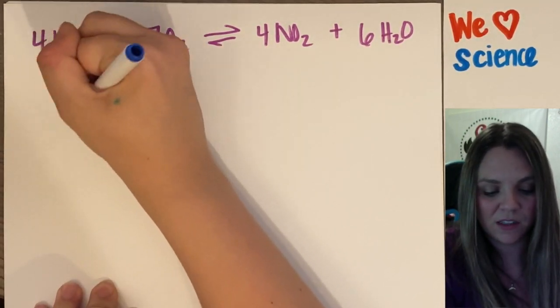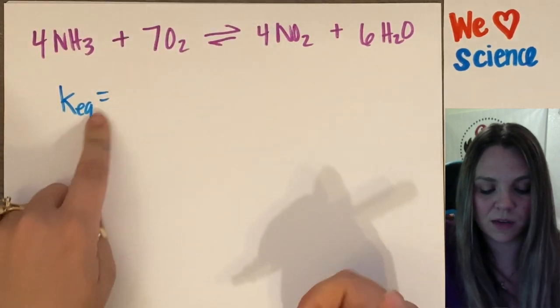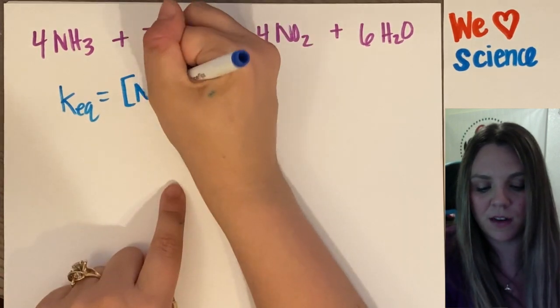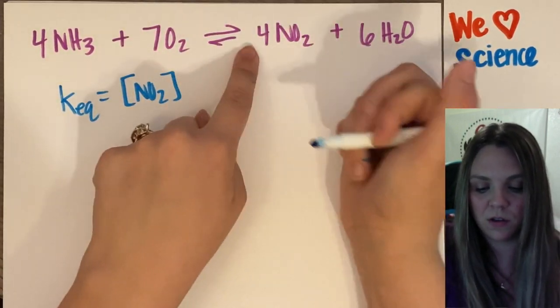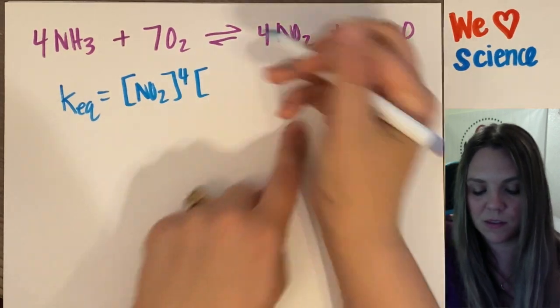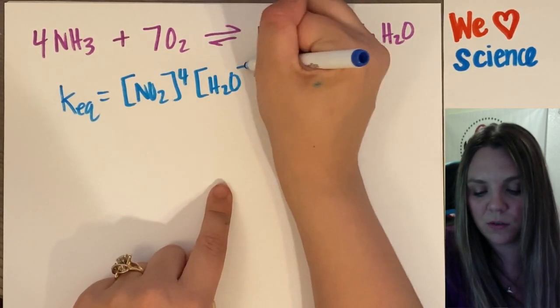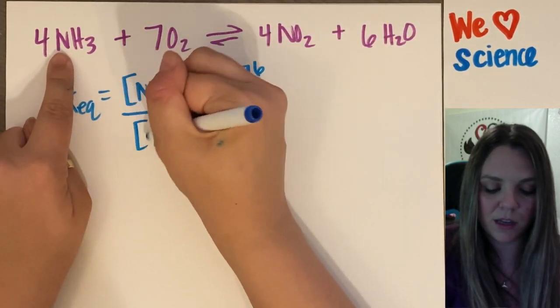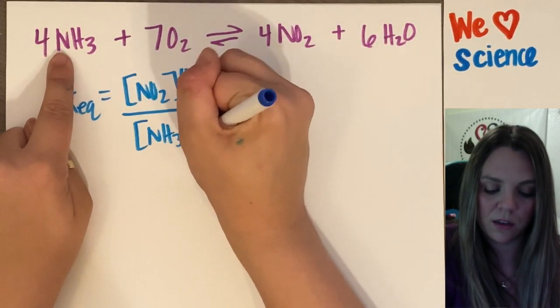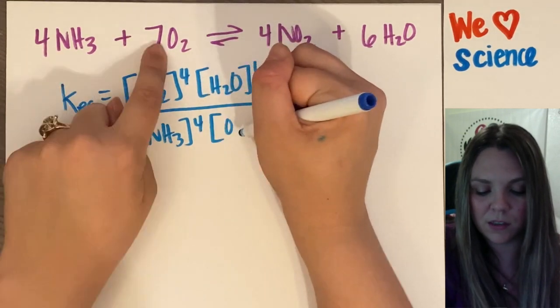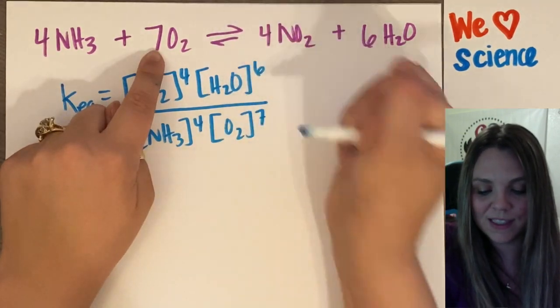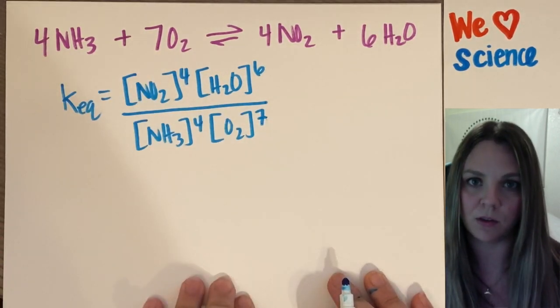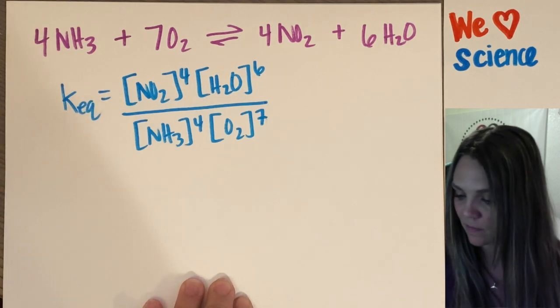This reacts to make 4NO2 plus 6H2O. So my K of equilibrium is going to be the concentration of products over reactants. So concentration of NO2 raised to the fourth power times H2O raised to the sixth power divided by NH3 to the fourth and O2 to the seventh. This would get me my constant at equilibrium.